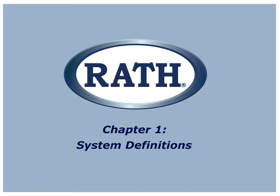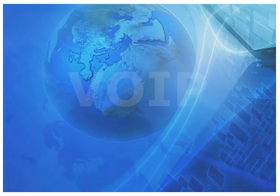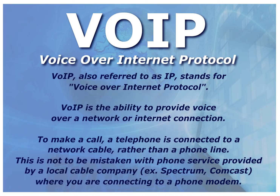Chapter 1: System Definitions. VOIP, also referred to as IP, stands for Voice Over Internet Protocol. VOIP is the ability to provide voice over a network or internet connection. To make a call, a telephone is connected to a network cable rather than a phone line. This is not to be mistaken with phone service provided by a local cable company, such as Spectrum or Comcast.